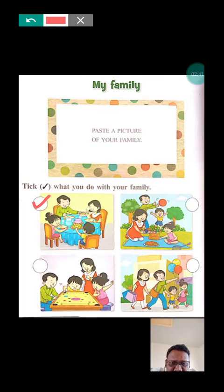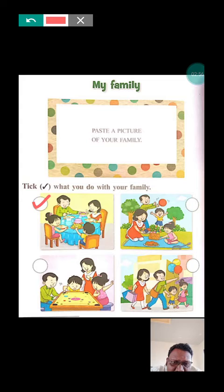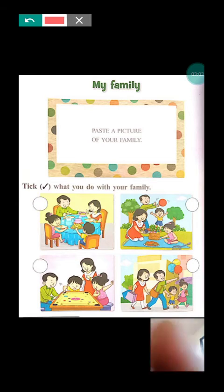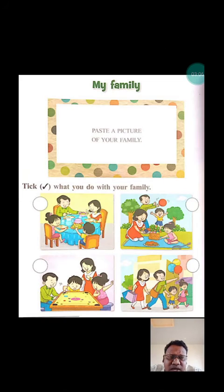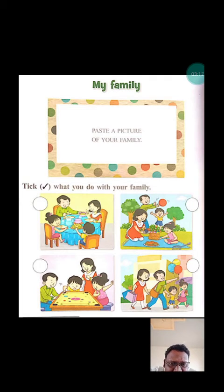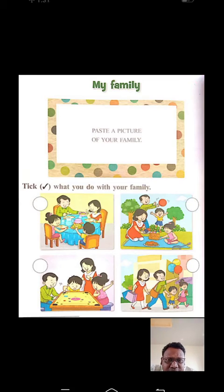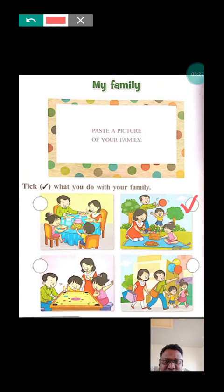In the second picture, you should tick here. They are playing — a boy and papa are playing, and mama and her daughter are putting something. I think they are also playing. So are you playing with your family? If yes, you should tick here.